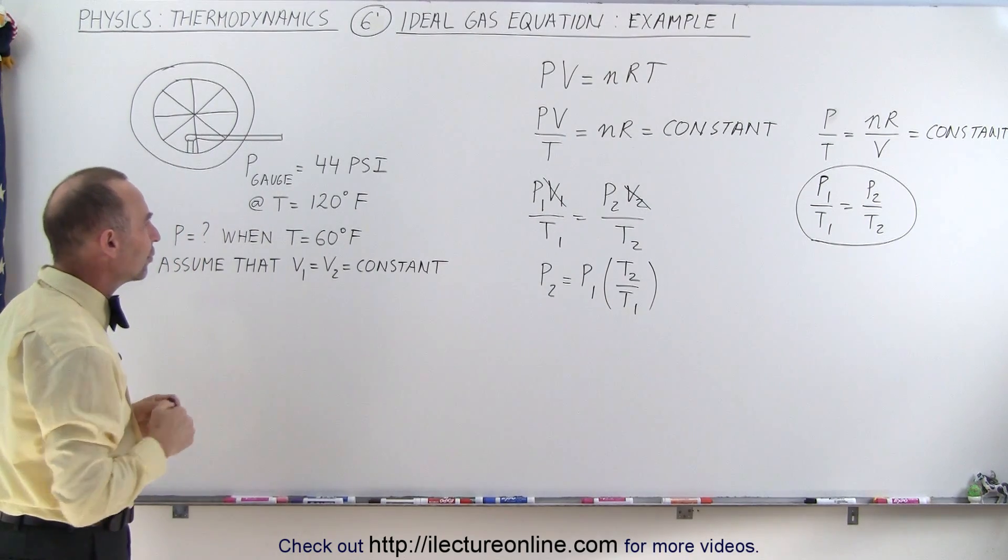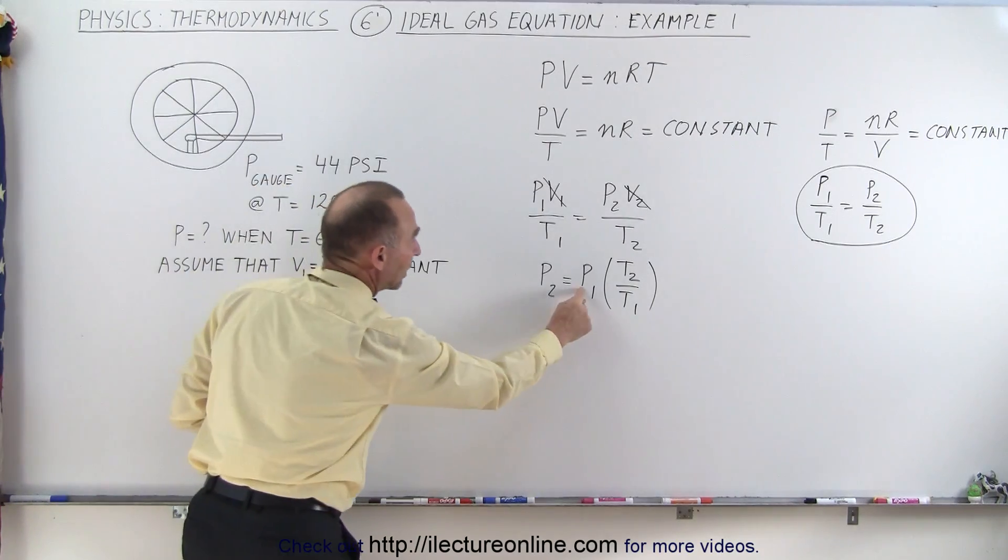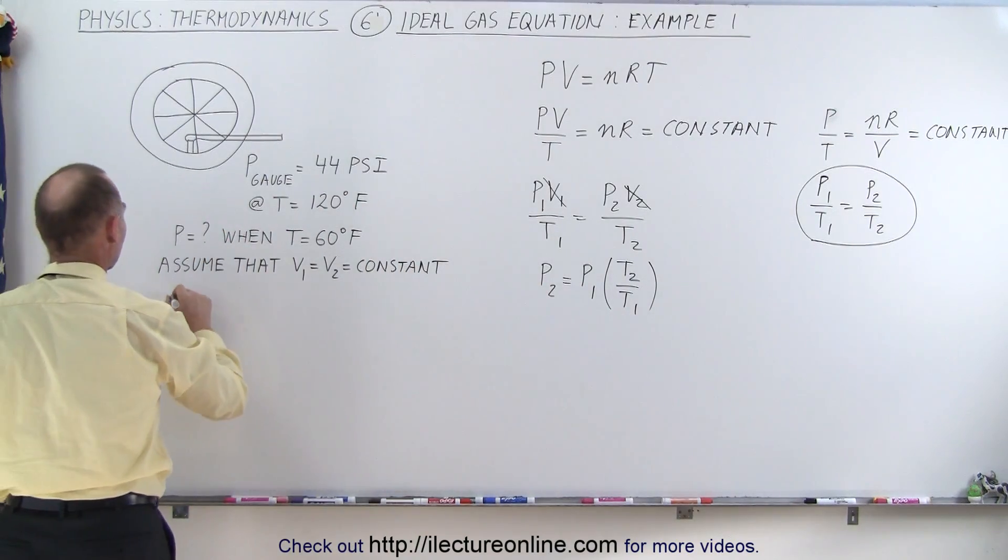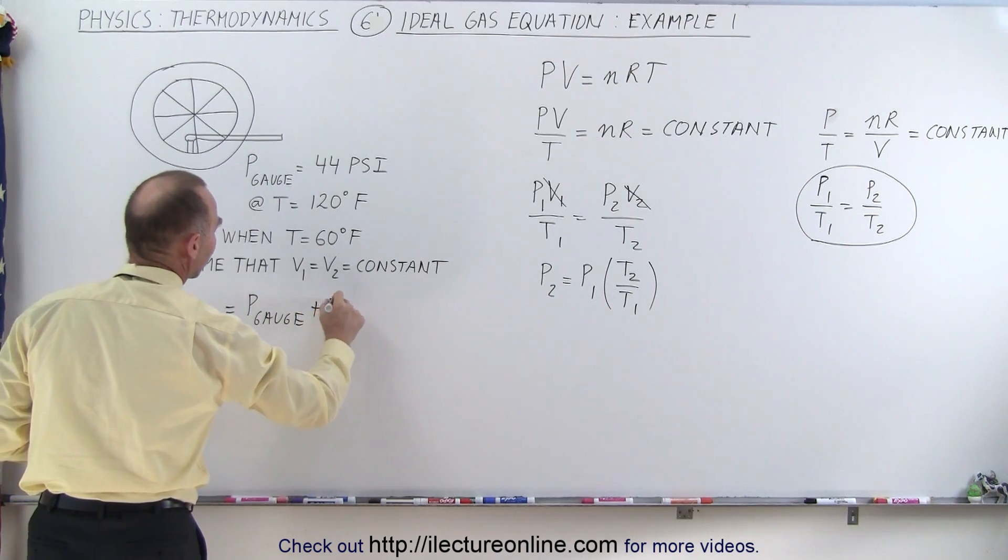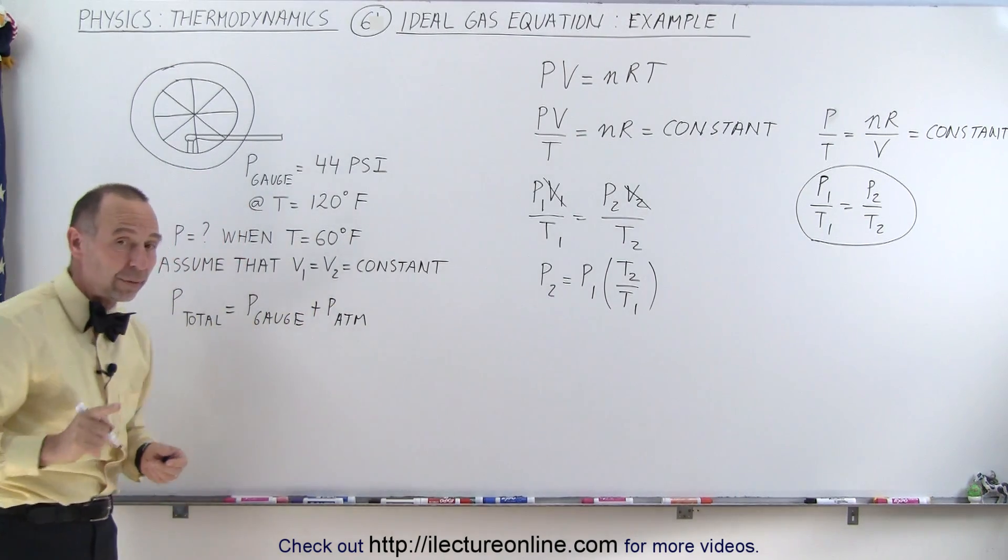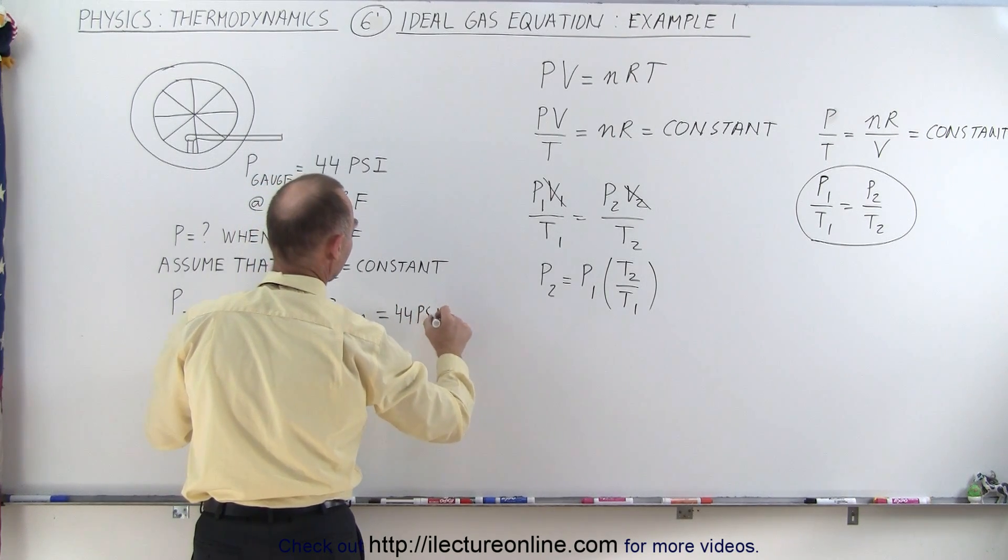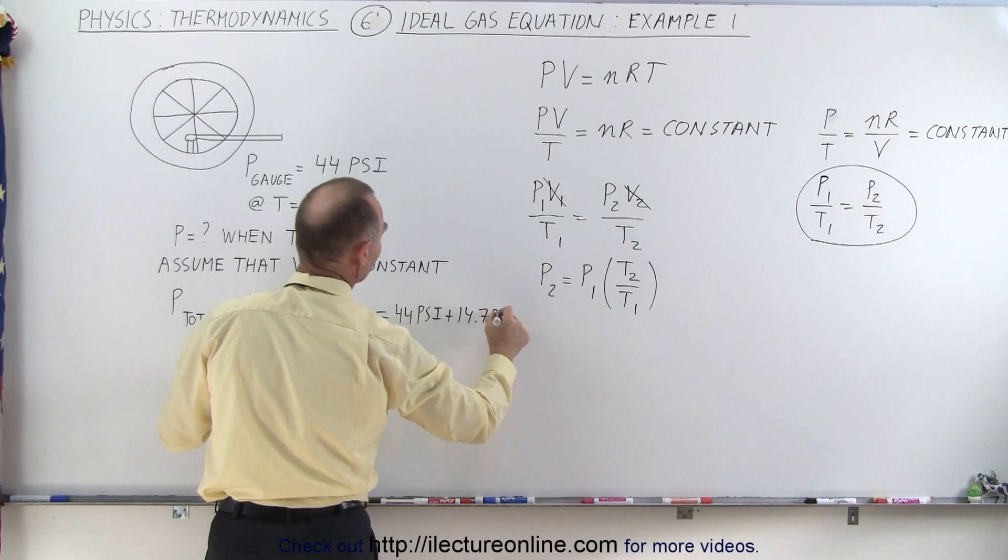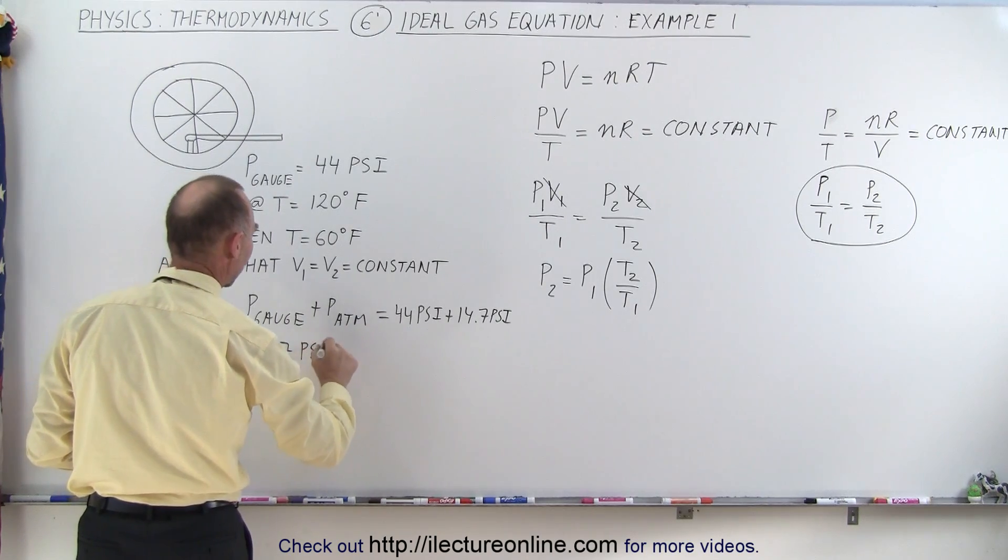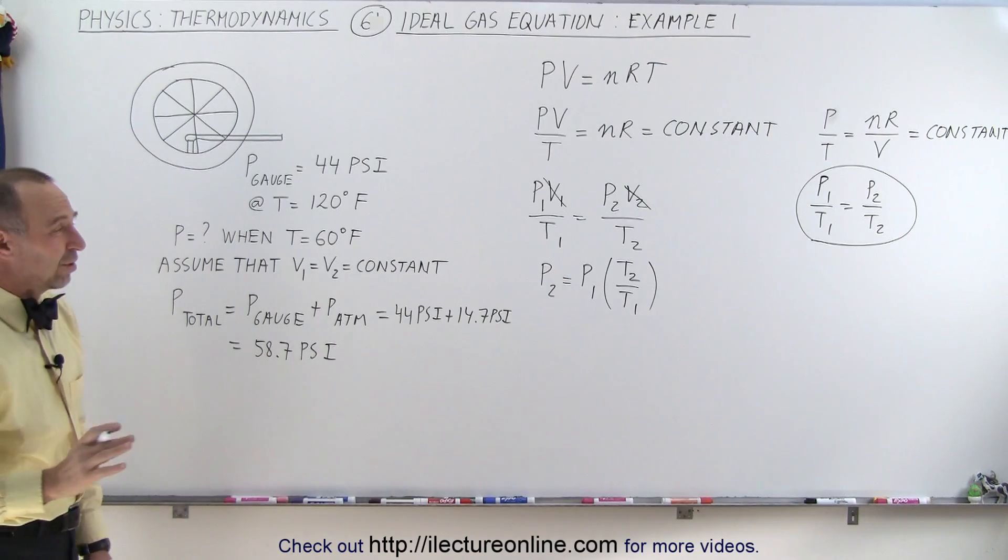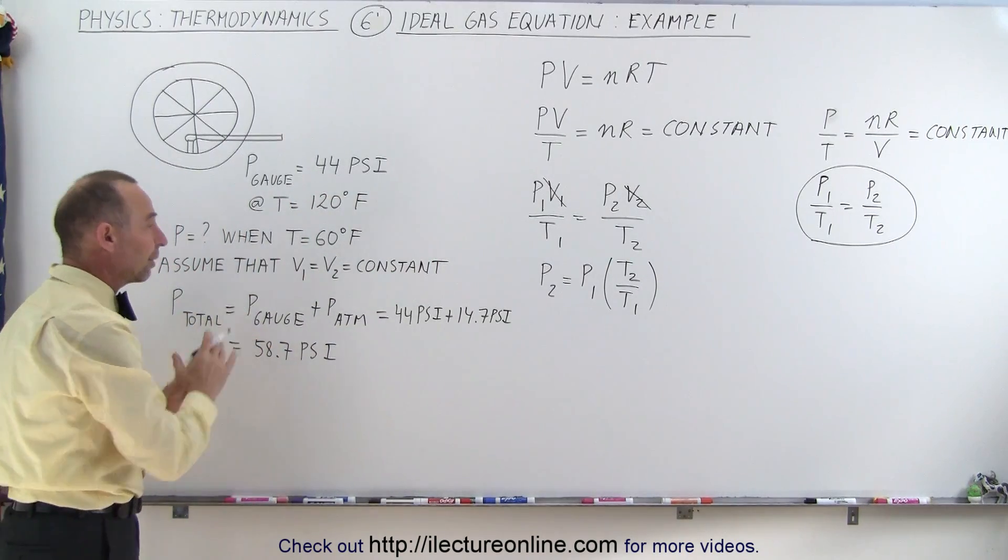First of all, let's convert the pressure. We have gauge pressure, which is not the total pressure. The pressure we want in here must be the total pressure, which means that P total is equal to the gauge pressure plus the atmospheric pressure. And in pounds per square inch, atmospheric pressure is 14.7. So this becomes equal to 44 PSI plus 14.7 PSI, which is equal to 58.7 PSI. Now, since we want to answer probably in PSI, we can go ahead and leave the pressure in terms of PSI. We don't have to convert it to atmospheres. As long as we have the total pressure, we're okay there.